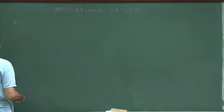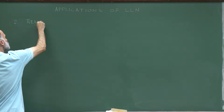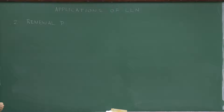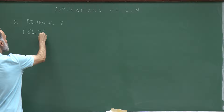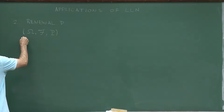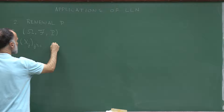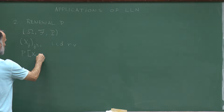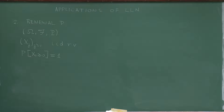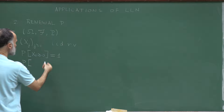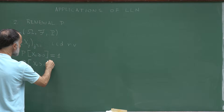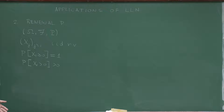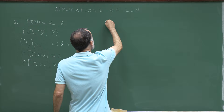My second application will be about the renewal process. Consider a probability space (Ω, F, P) with a sequence X_j of i.i.d. random variables. I will assume these random variables are positive: P(X_1 ≥ 0) = 1, and that X_1 is not identically 0, so P(X_1 > 0) > 0. With this family of i.i.d. variables, I define S_n as the sum of the first n terms.